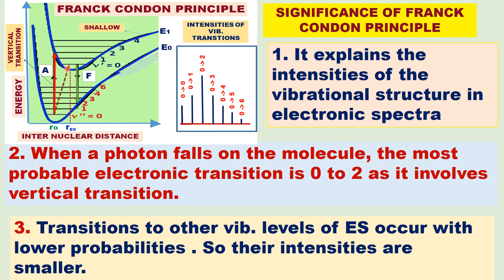Although 0 to 0, 0 to 1, 0 to 2, 0 to 3, and 0 to 4 are all equally allowed quantum mechanically, according to the Frank-Condon principle the most probable transition is 0 to 2 for this case. Transitions to other vibrational levels — 0 to 0, 0 to 3, 0 to 4 — occur with lower probabilities, so their intensities become smaller and smaller. Therefore, for case 2, the intensities increase and then diminish with increasing vibrational quantum number.